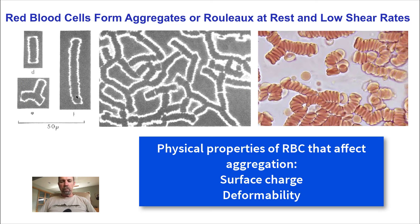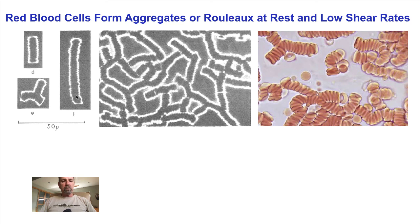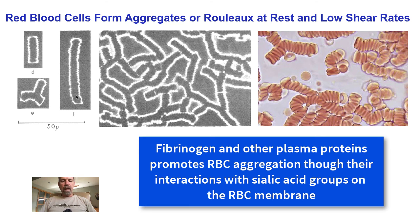The strength of the aggregation depends on the physical properties of the red blood cells, such as their deformability and surface charge. In blood plasma, macromolecular plasma proteins, especially fibrinogen, interact with the negatively charged sialic acid and glycoproteins on the surface of the red blood cell membranes to facilitate aggregation.